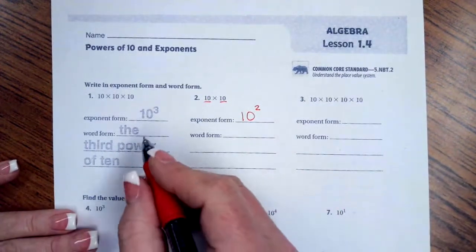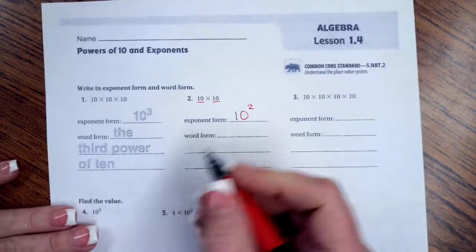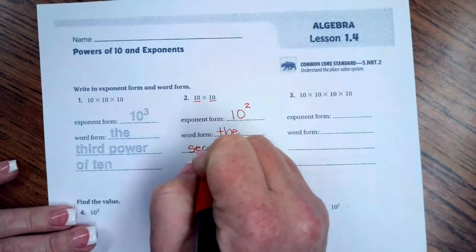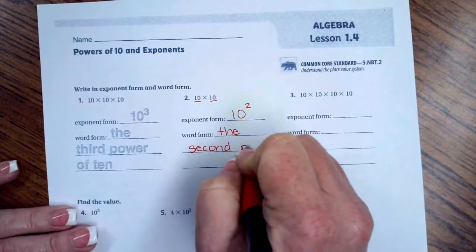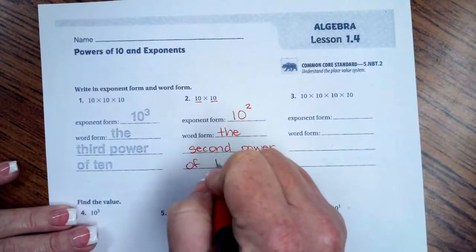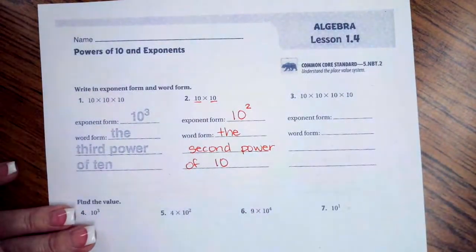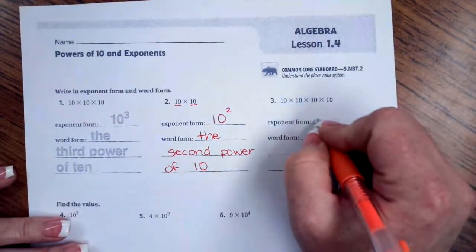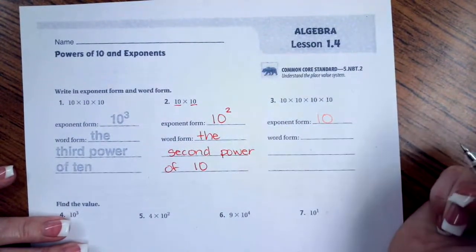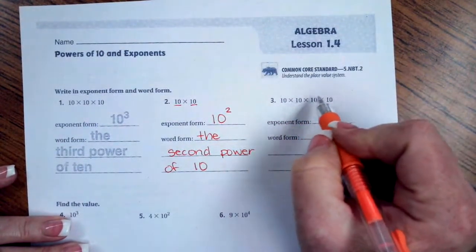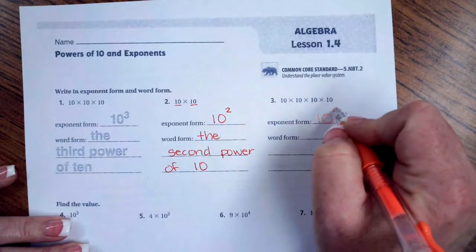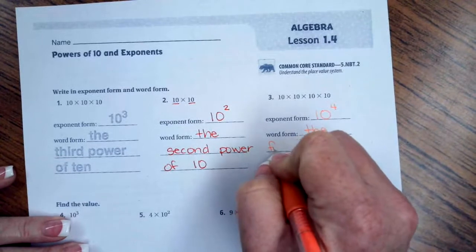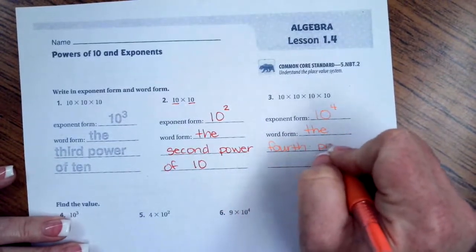Now over here, our base is going to be ten just like before, but we have one, two, three, four of them, so the fourth power.